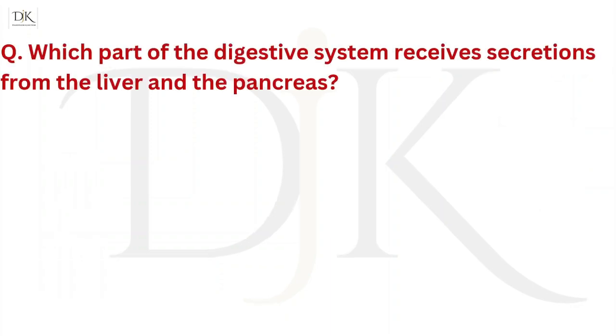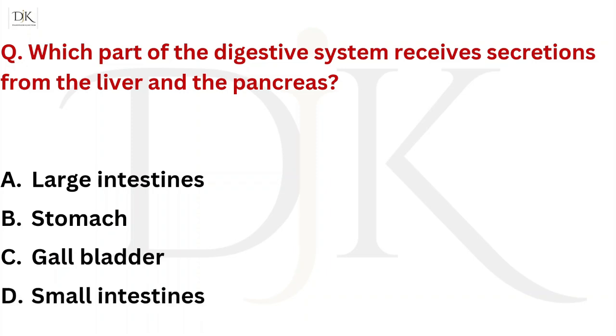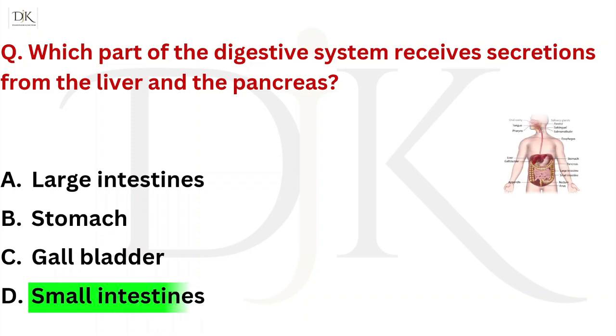Which part of the digestive system receives secretions from the liver and the pancreas? Right answer is small intestine.